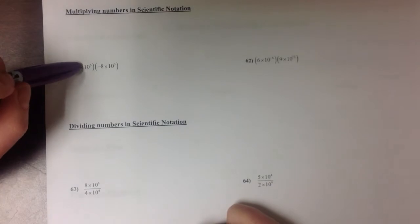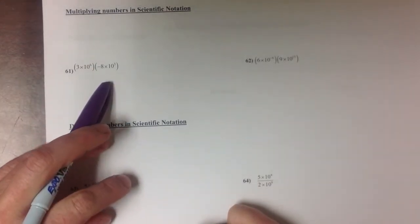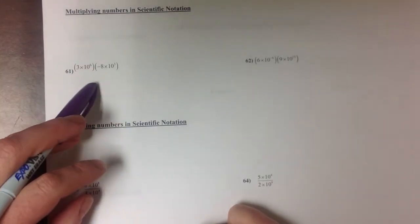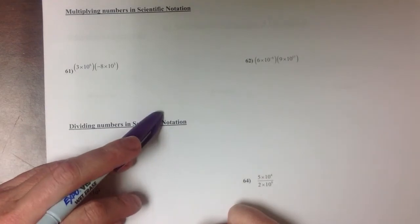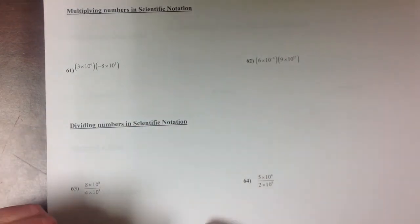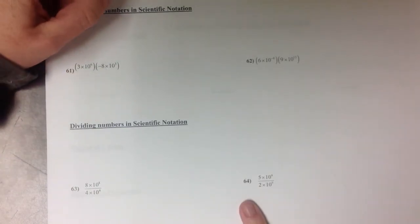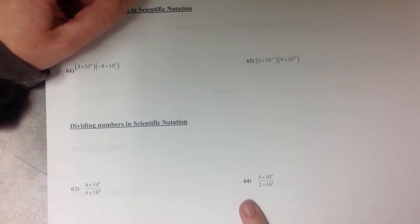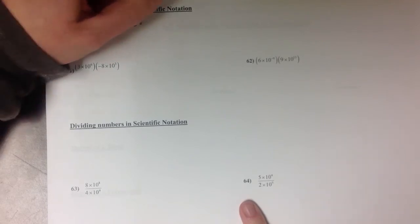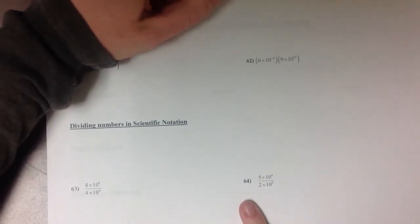We could write them out as standard notation numbers and then do the math with them in that form and then put them back into scientific notation. But let's see if there might be a shortcut to not have to do all of that. So your first step with multiplication is to use the associative property to regroup.